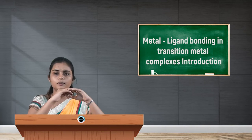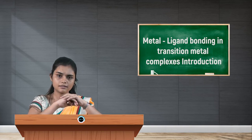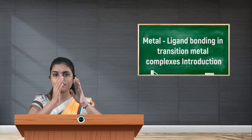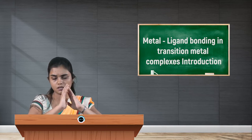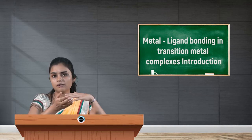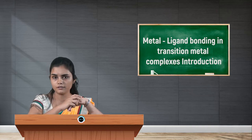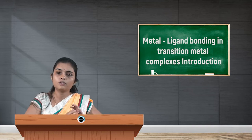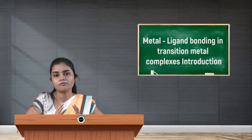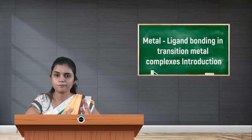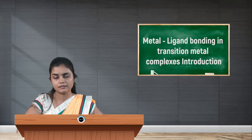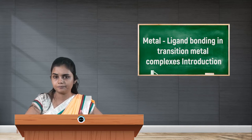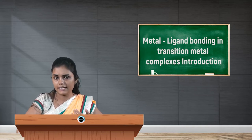What is covalent bonding? Covalent bonding is nothing but the mutual sharing of electrons between two atoms. What is ionic bonding? Ionic bonding is where there is a transfer of electrons from one atom to another. Best examples are NaCl and HCl.